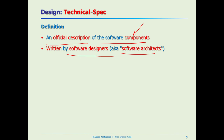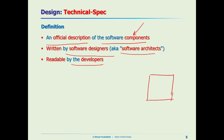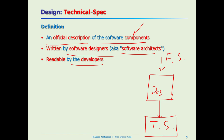It will be read by developers. Every phase has one input and one output. The artifact we input to design will be the functional spec, and the output would be the technical spec. The next phase is implementation, that's why developers should be able to read the design document.